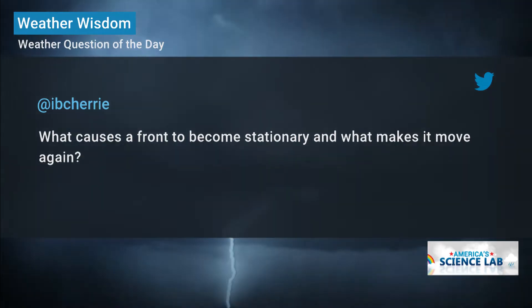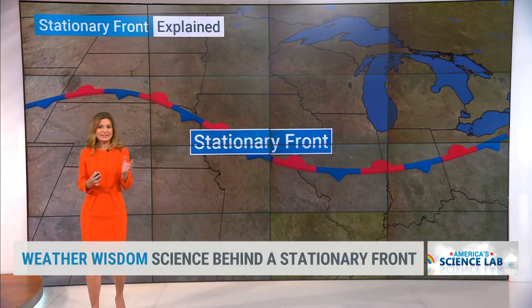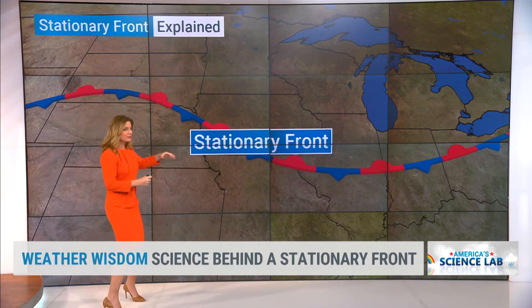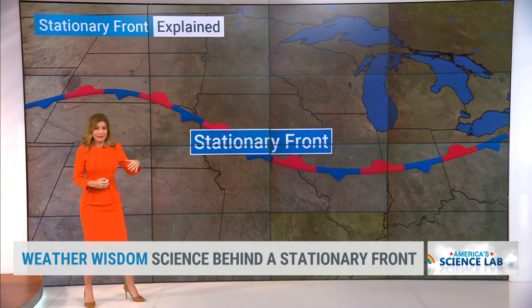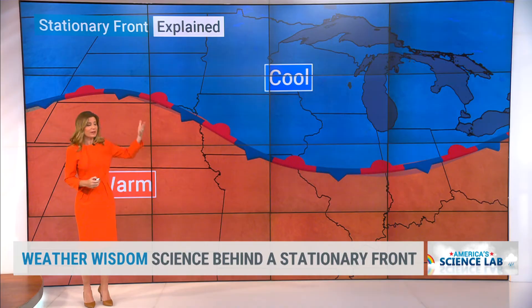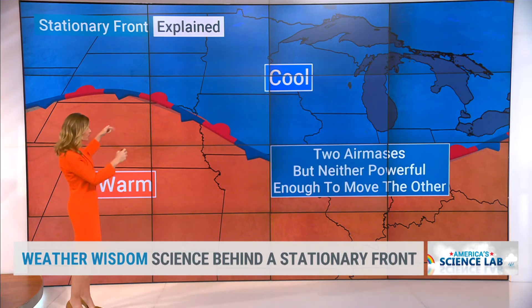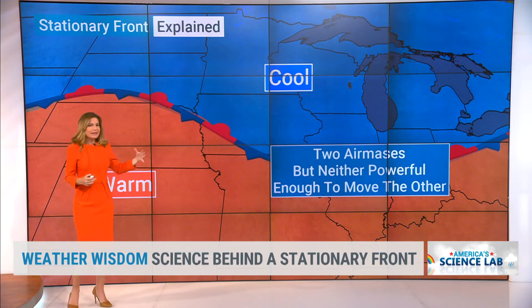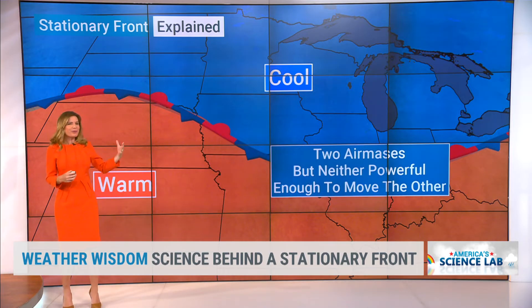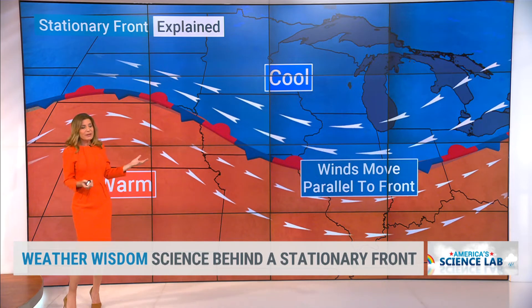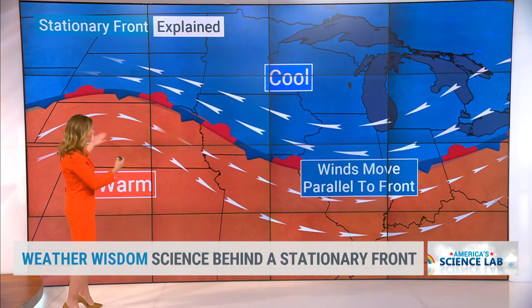All right, so let's look at this. We sometimes get these stationary fronts set up. If you think about what a front is, it's a boundary between two different types of air masses. In the case of a stationary front, you've got cold or cool air to the north and warm air to the south. These two air masses are in place, but neither one is really strong enough to make a move, so the winds end up sort of paralleling along the front.